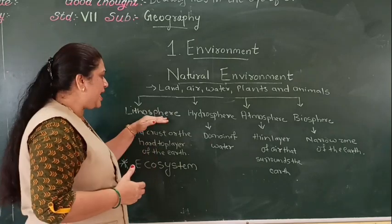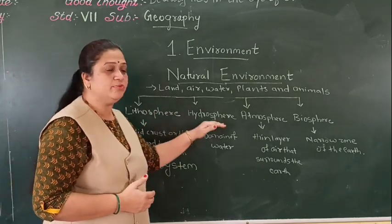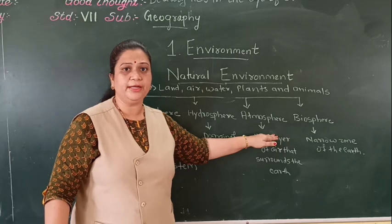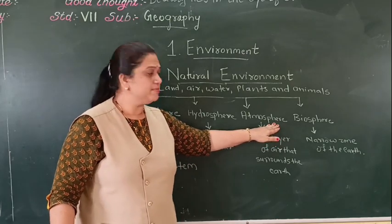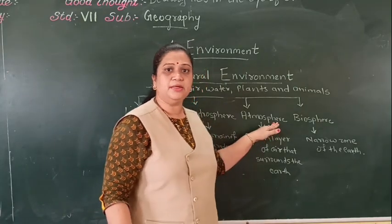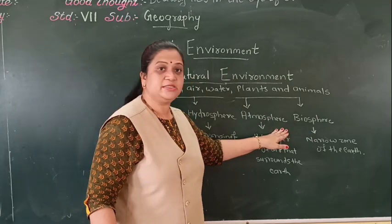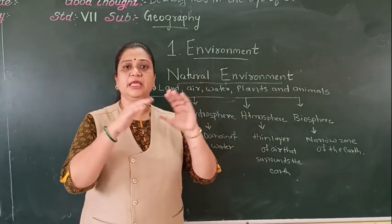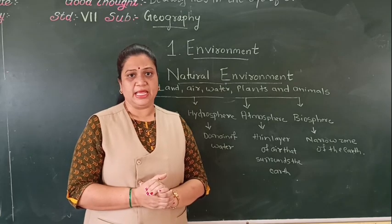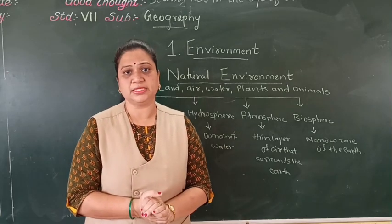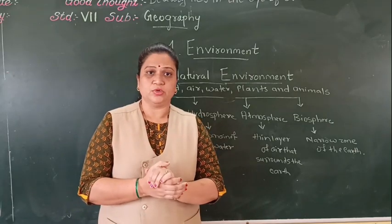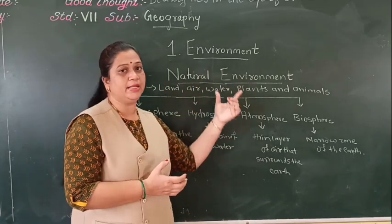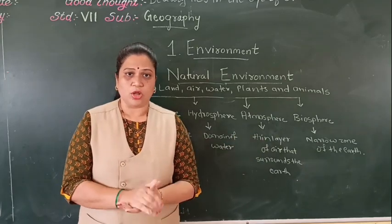Let us talk about human beings. We have land to live on, but water is also a very important component of life. Air, the atmosphere layer, is the most important because we need air to breathe — all living organisms and plants and animals need air, water and sunlight. The interaction between all these spheres forms the ecosystem. It is very important to keep the balance in the ecosystem; if any component of the natural environment is missing, the ecosystem will not be balanced.